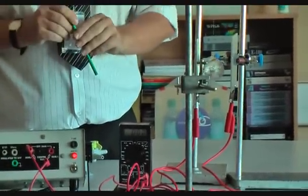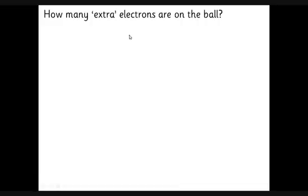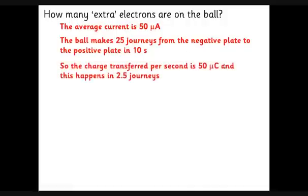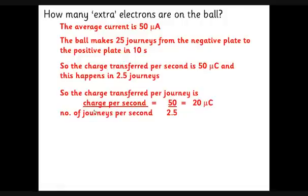If we want to calculate how many extra electrons are on the ball - remember there's loads of electrons on the ball already because it's made of atoms, but we're talking about how many extra electrons get picked up. We've got an average current of 50 μA, and the ball made 25 journeys from one plate to the other in 10 seconds. So the charge transferred per second is 50 microcoulombs, because that's what 50 microamps means. It took 2.5 journeys per second, so the charge transferred in each journey is the total charge per second, 50 microcoulombs, divided by 2.5 journeys, which is 20 microcoulombs of charge each journey.